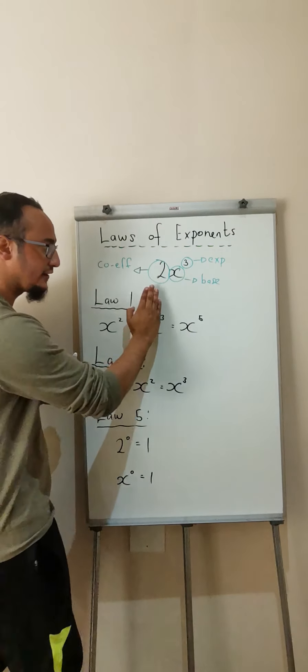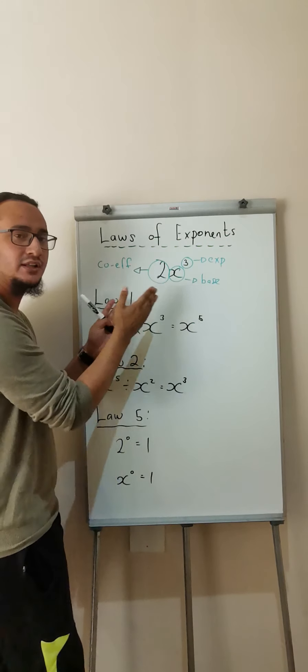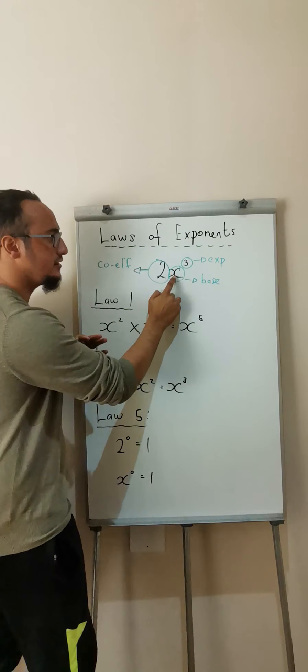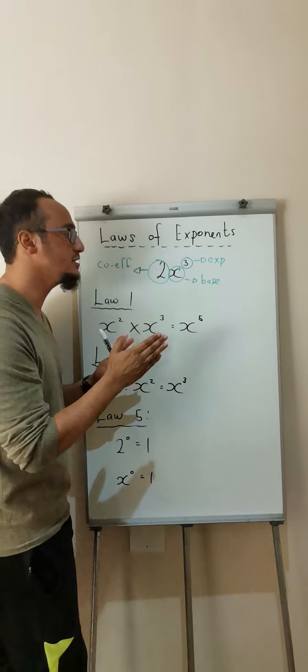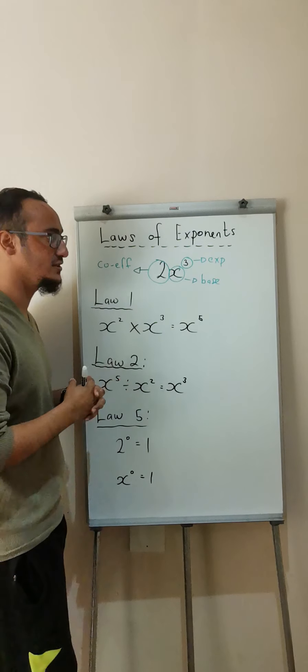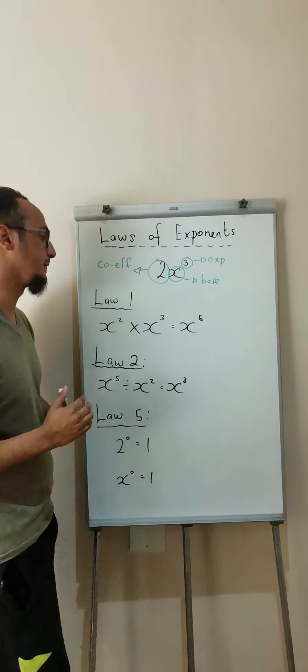Okay, so firstly I have 2x to the power of 3 over there. The 2 which is in front of my letter is known as the coefficient. The letter of x is known as my base and the exponent over there is 3 and that is known as your exponent or either your index. Most of the time we just use the word exponent.